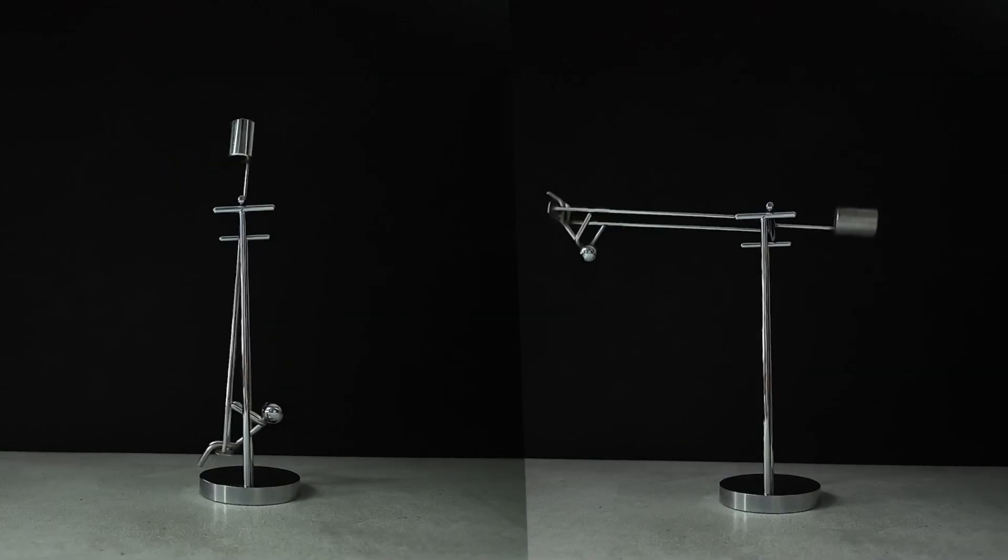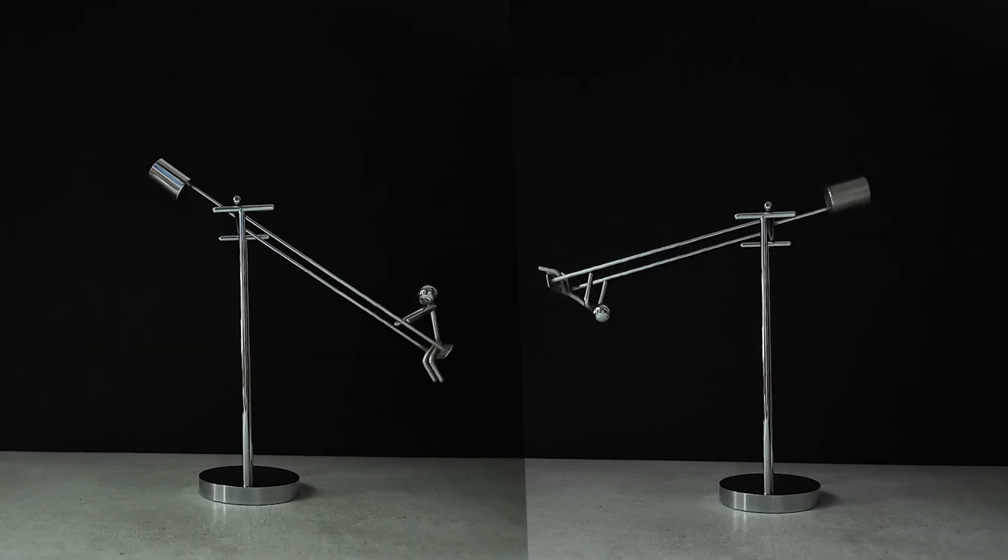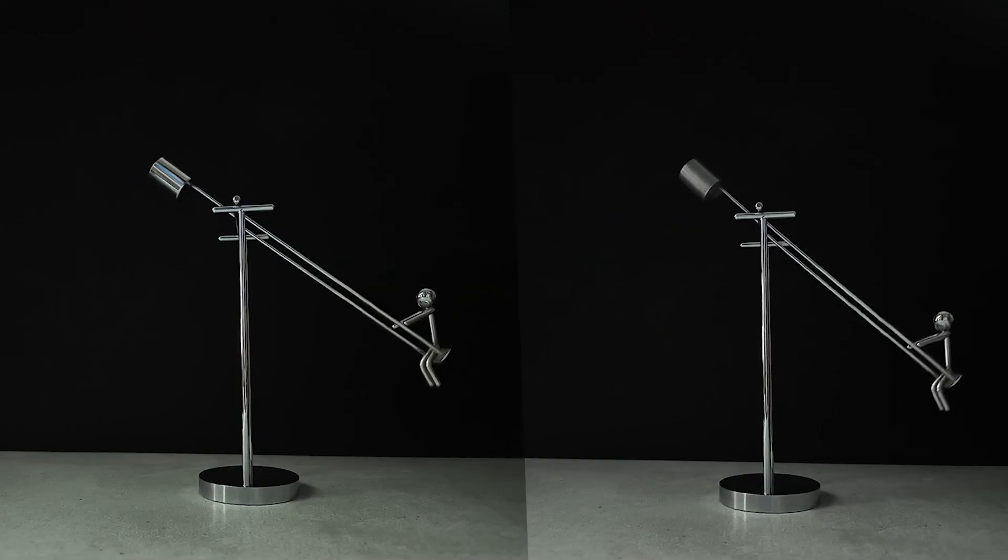Here, you can clearly see that the greater the weight difference between the two sides of the pivot rod, the faster the movement becomes, resulting in shorter oscillation time.